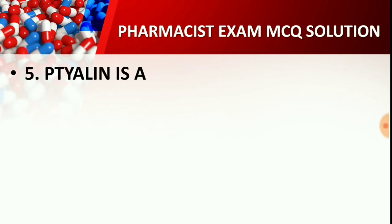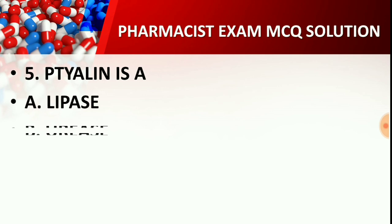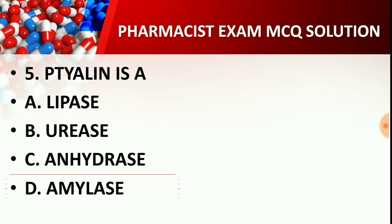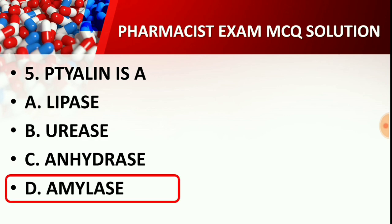Question number 5: Tylin is a type of what? Option A: Lipase, Option B: Urease, Option C: Enhydrase, Option D: Amylase. The correct answer is Option D — Amylase. Tylin is a type of Amylase. Such lesser-known questions can also be asked in the pharmacist exam, so it is important to remember these.